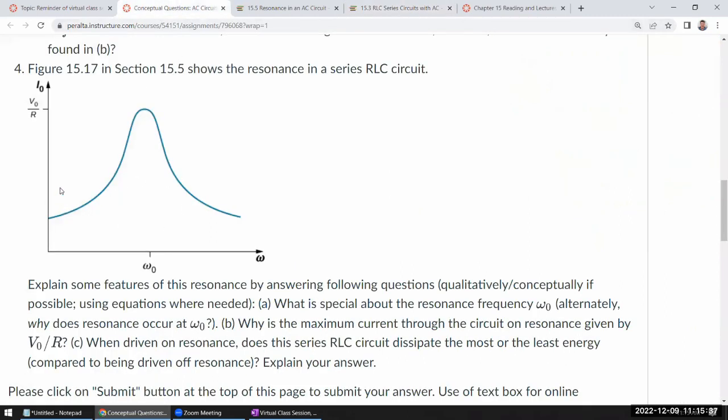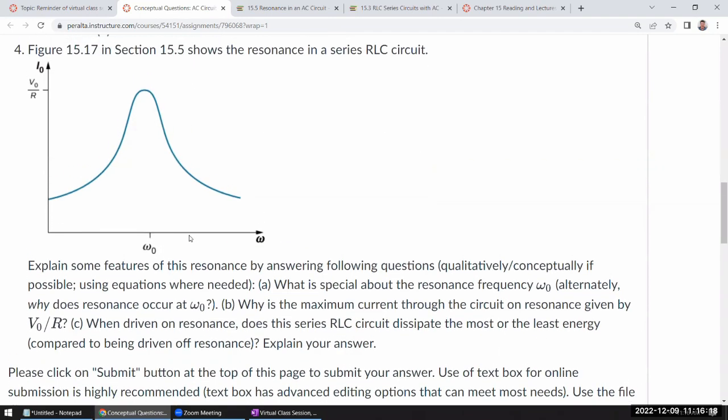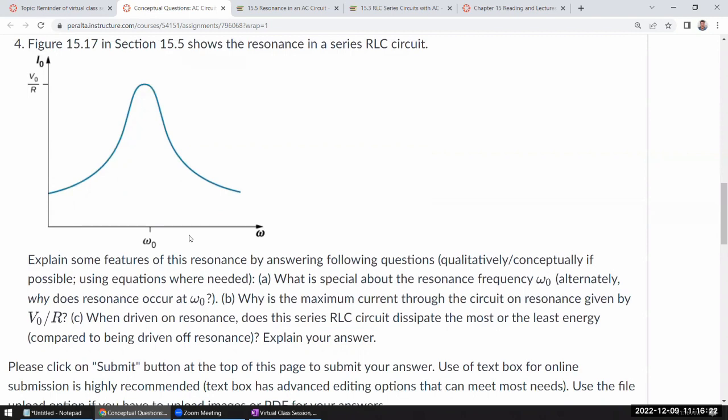This is what they're describing as resonance. You measure how much current flows through the circuit. It's saying that it's a function of frequency. It depends on frequency. There's a certain frequency where you see the most amount of current flowing through the circuit. Explain some features of this resonance by answering following questions. What is special about the resonance frequency? You have some current maximum at this frequency. That looks special. That's really one of the things you would say about resonance: that you get the most effect produced with the same amount of effort or driving input, same amount of input voltage.